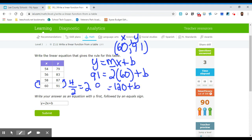And then equals 91. 2 times 60 is 120. Then to solve for b, we're just going to subtract 120 from both sides, minus 120. Cross that out, leaving b equals.